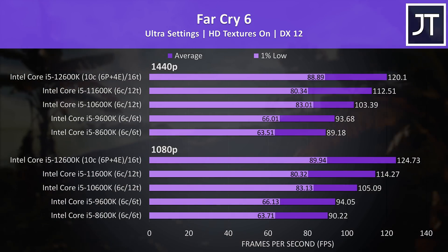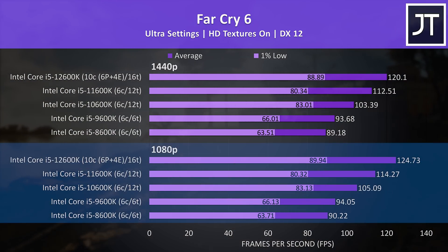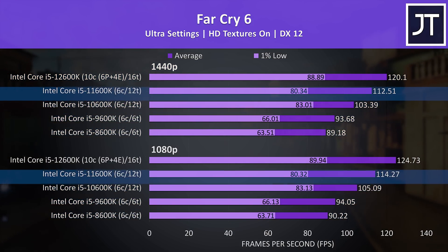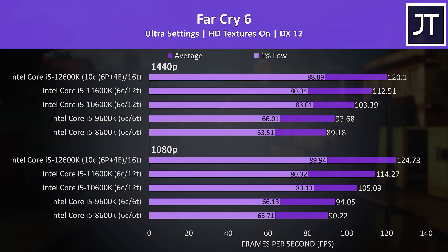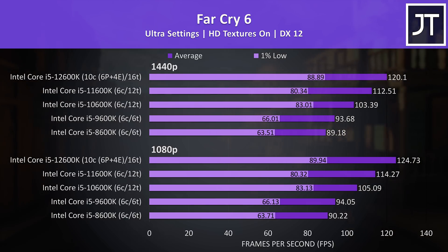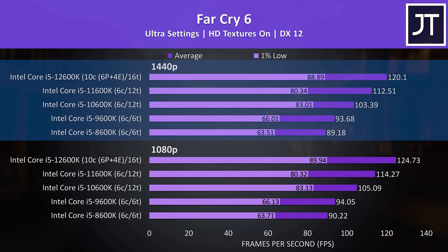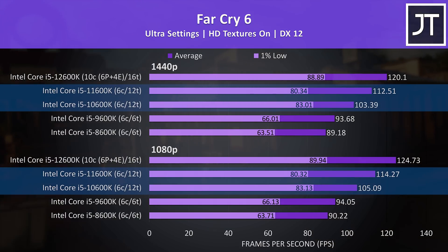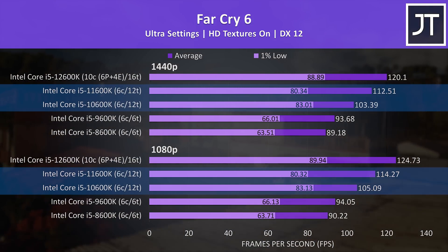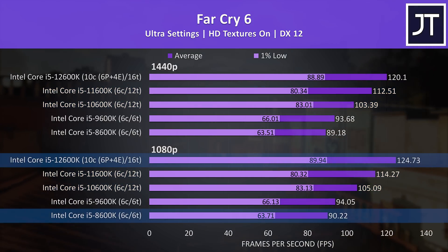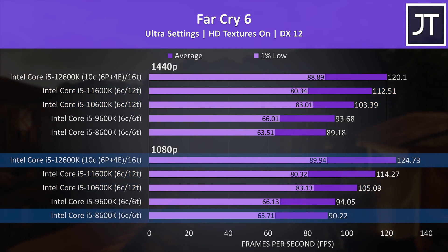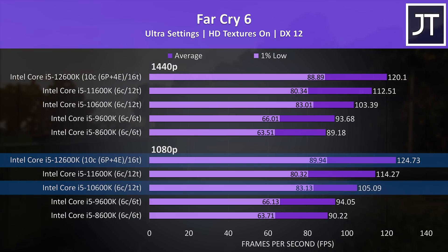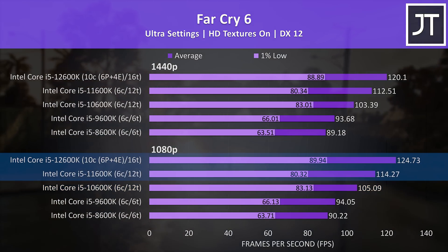Far Cry 6 was tested with the game's benchmark. 1080p results are on the bottom half of the graph and 1440p results above, with oldest results at the bottom moving up to newer processors. There are performance improvements to average frame rates with newer processors even at 1440p, though the 1% lows on 11th gen took a nosedive compared to 10th gen. At 1080p, 12th gen reached 38% higher average FPS than 8th gen, 33% higher than 9th gen, 19% higher than 10th gen, and 9% higher than 11th gen.